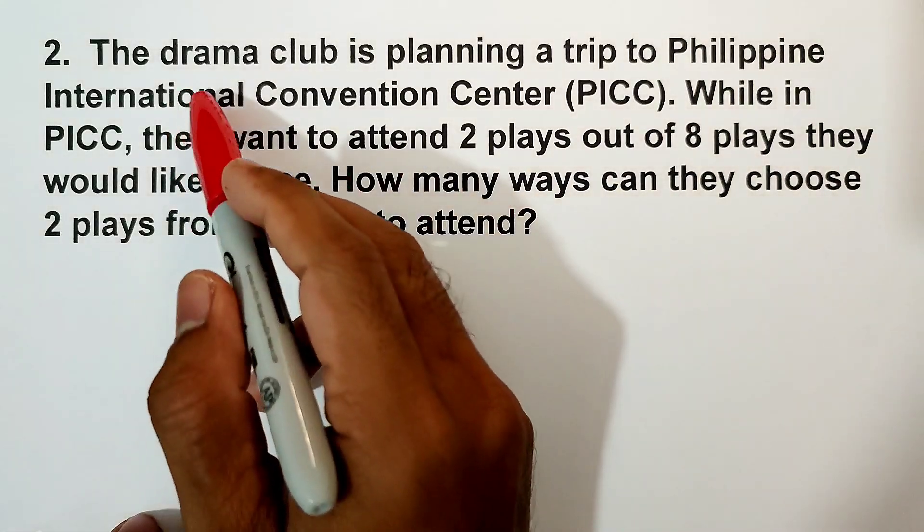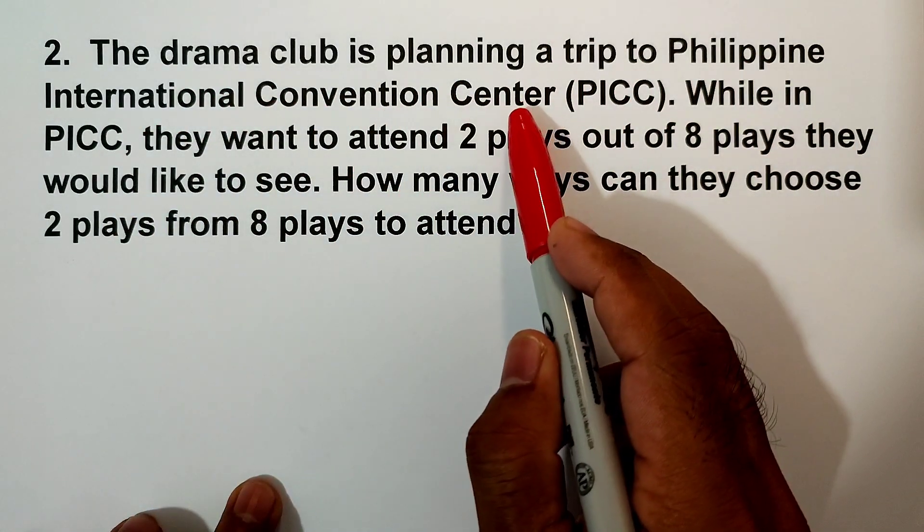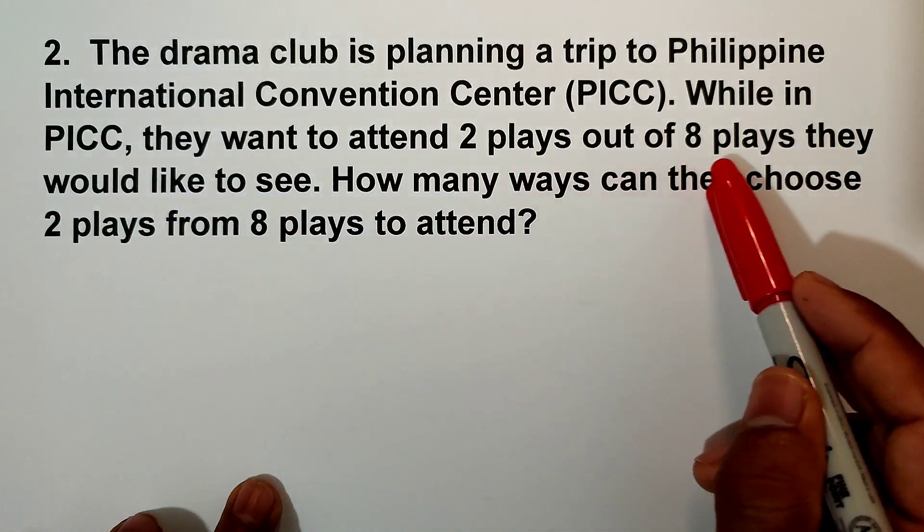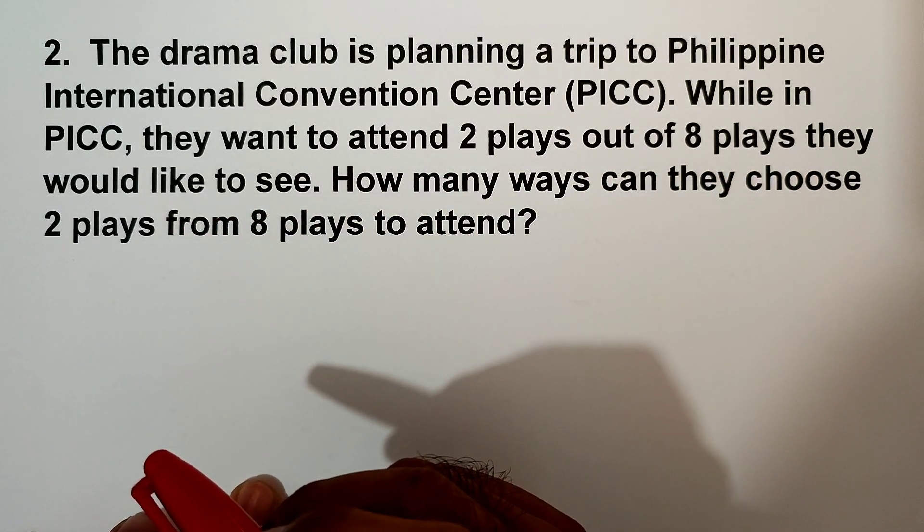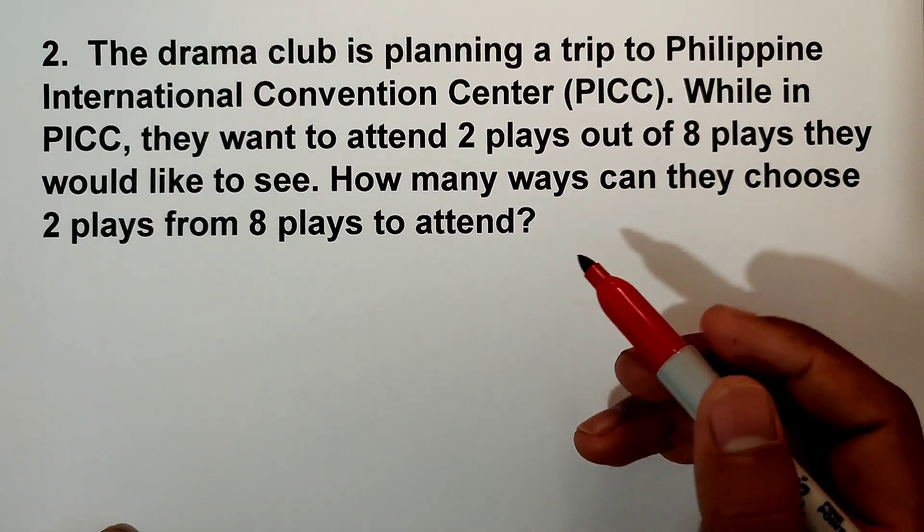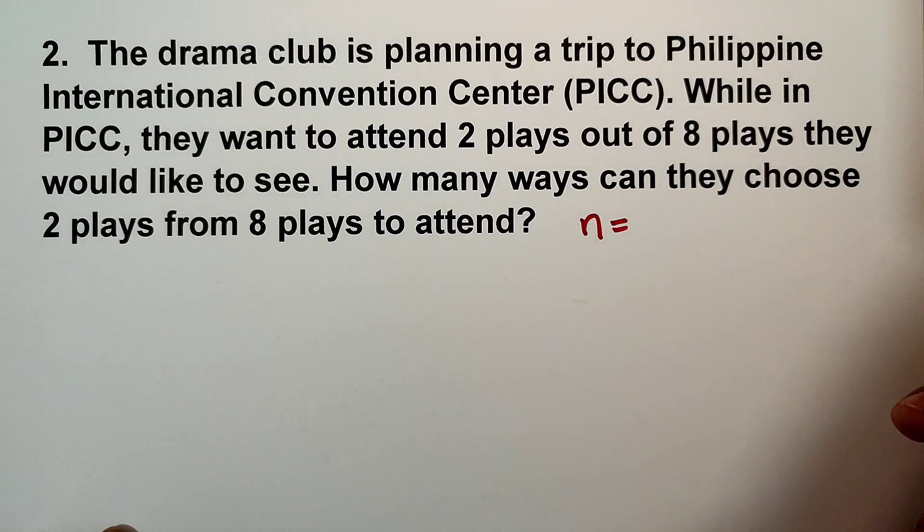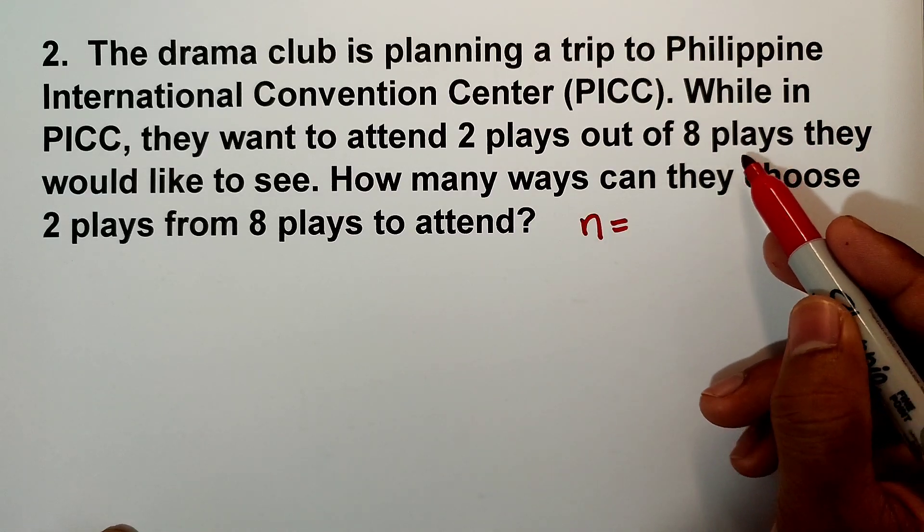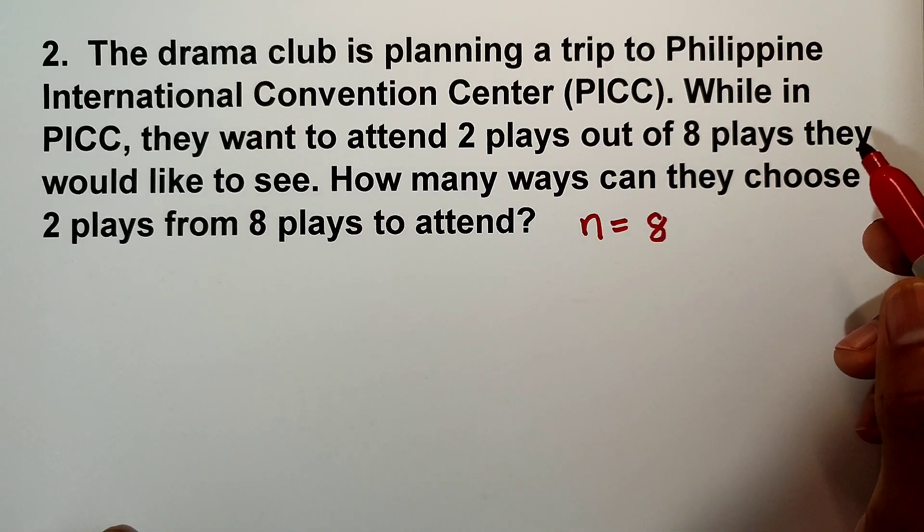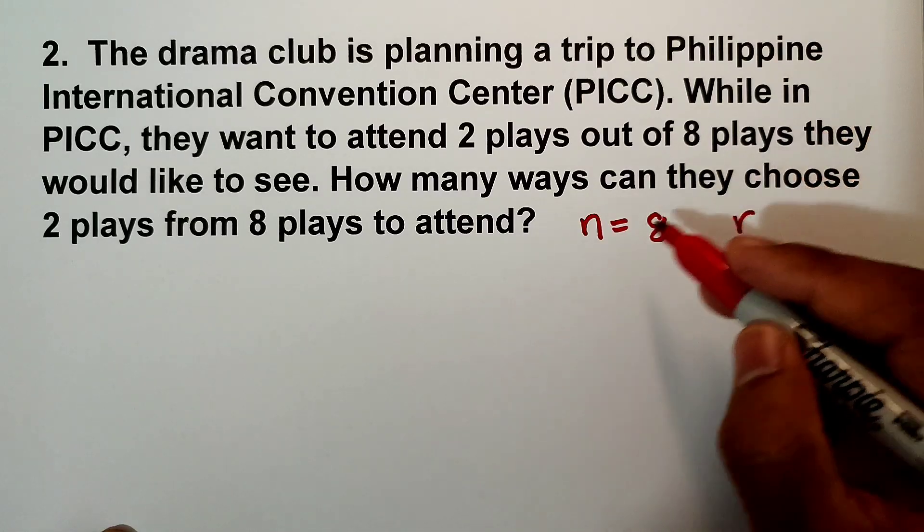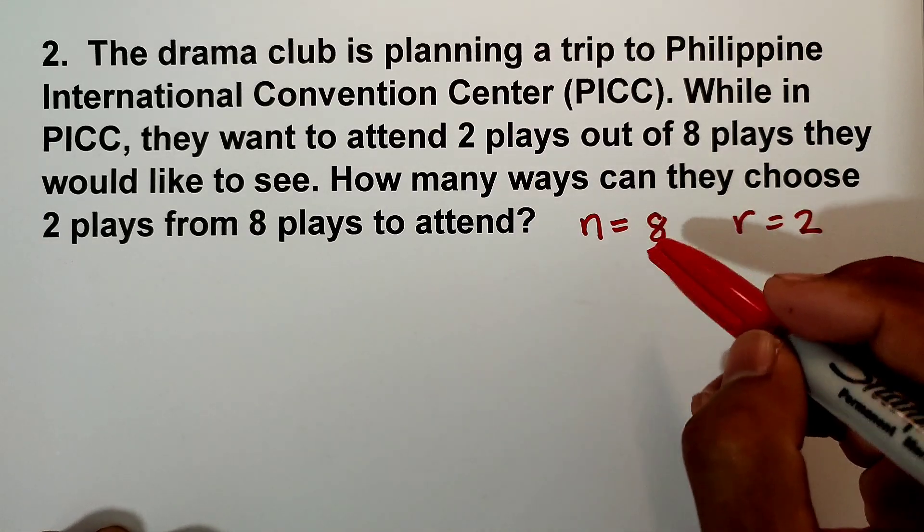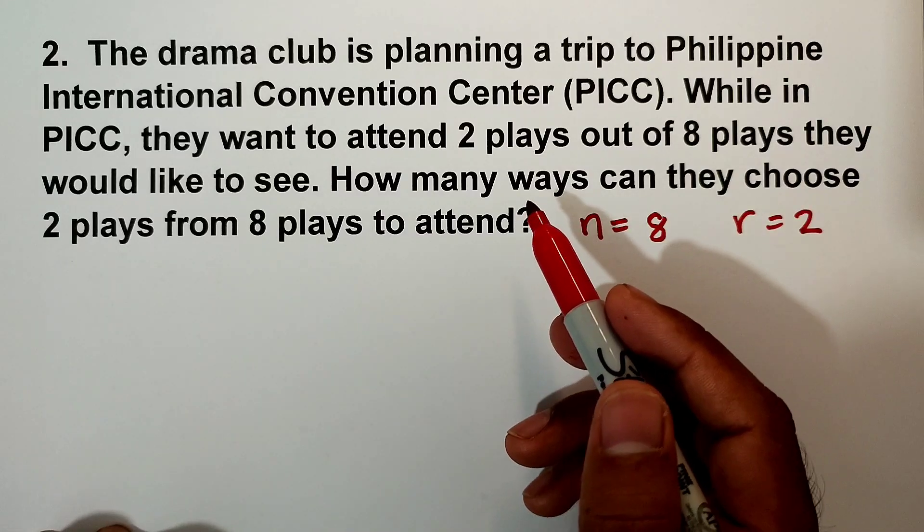So let us have example number 2: The drama club is planning a trip to Philippine International Convention Center or PICC. While in PICC, they want to attend 2 plays out of 8 plays they would like to see. So how many ways can they choose 2 plays from 8 plays to attend? Identify n. n is the number of objects, so 8 plays. There are 8 choices and they want to choose 2, so r is equal to 2. So it's simple - just identify n and r, and then of course, choose.